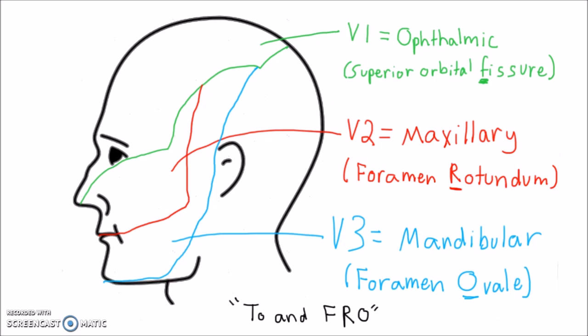The ear has a variety of innervation that is difficult to pin down exactly. For most students, it is sufficient to know that V3 contributes anteriorly, C2/C3 contributes posteriorly, and that 7 and 10 contribute in the middle. There will be a link to the exact distribution in the description box for those who are curious.